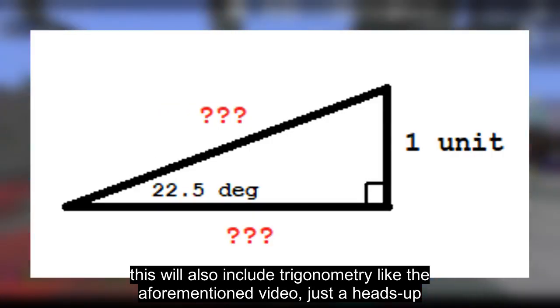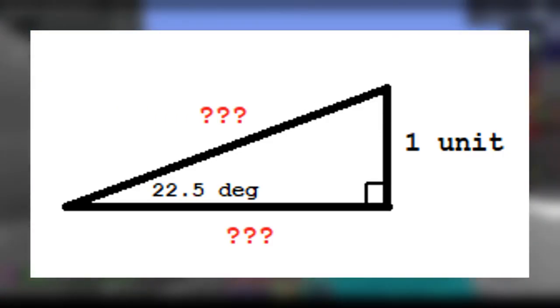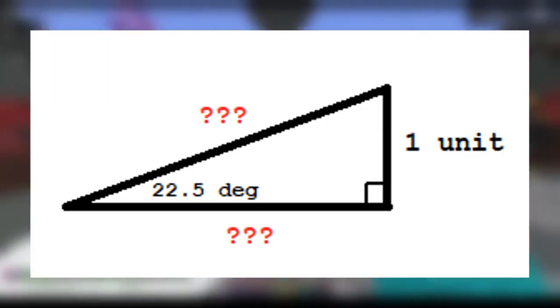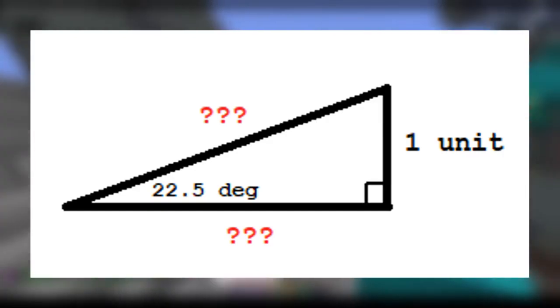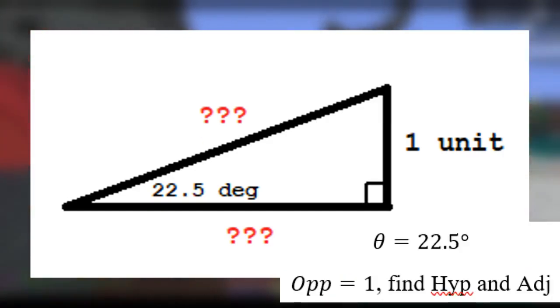Assume that a 22.5-degree slope has these given properties. Its angles are 22.5, 67.5, and 90 degrees, and its opposite side measures one unit or one block high. How many units would the hypotenuse and adjacent side be?